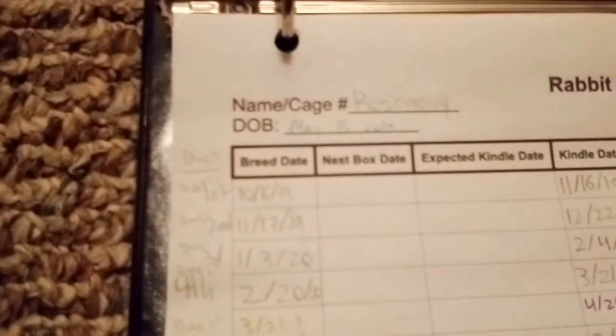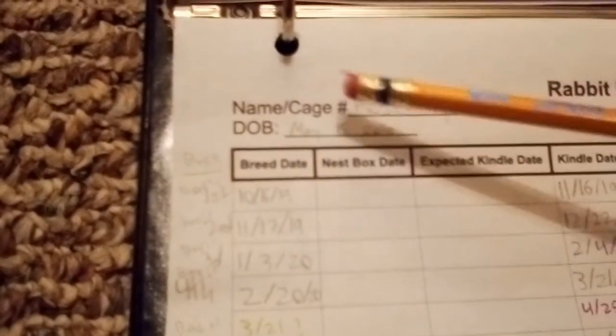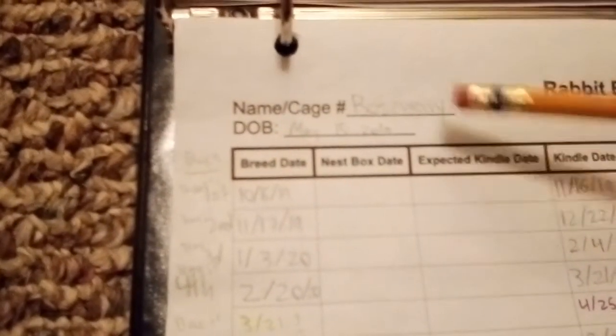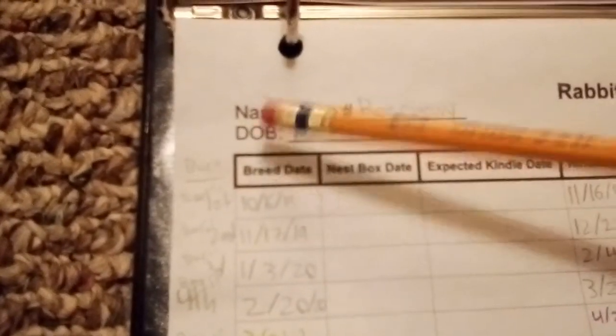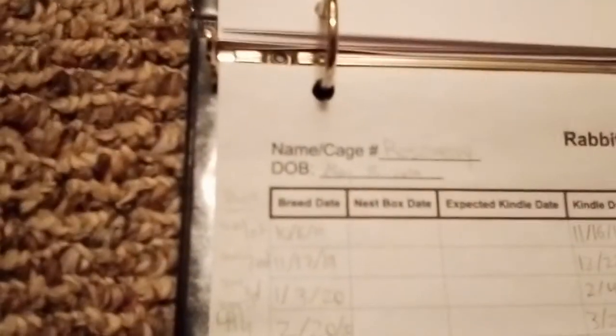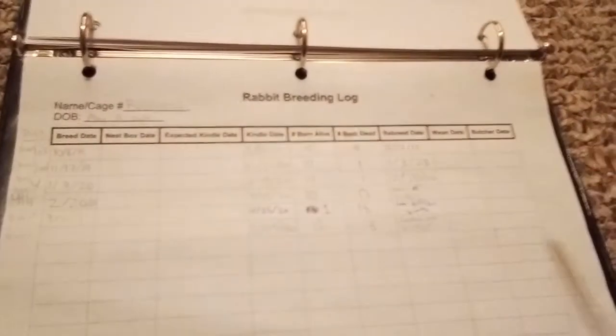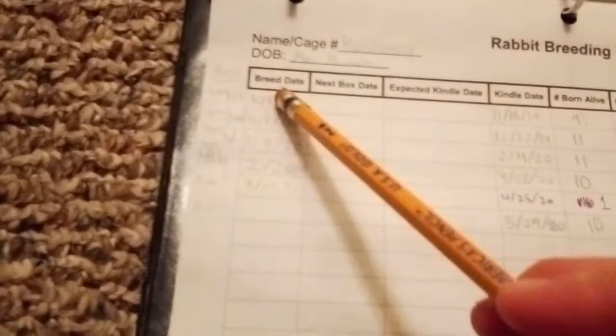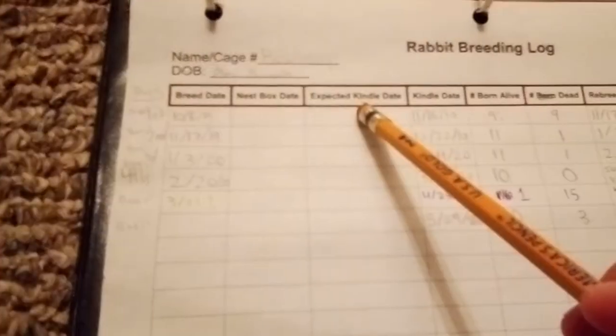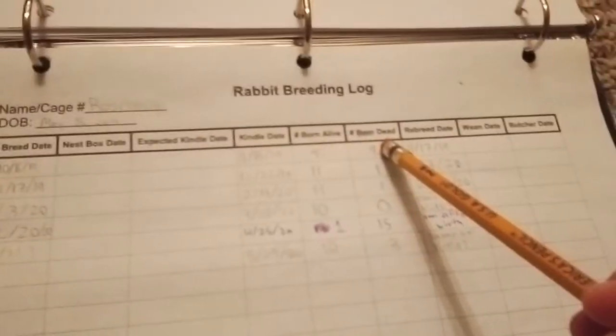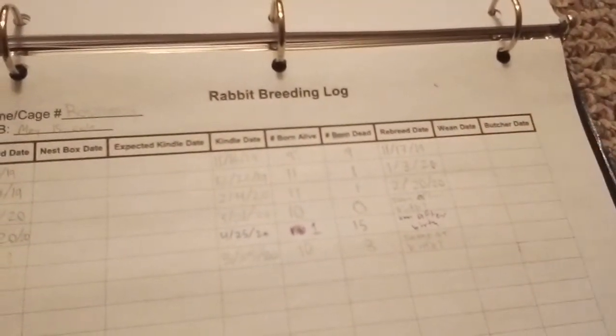Her DOB stands for date of birth - she was born May 15th, 2019. Then we have this graph with breed date, nest box date, expected kindle date, kindle date, number born alive, number born dead, rebreed date, wean date, butcher date.